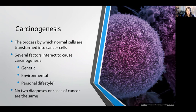For example, two people can have the same environmental exposure risk, such as the same level of sun exposure throughout their lifetime, but their unique genetics may make it so that one of them develops skin cancer and the other one does not.